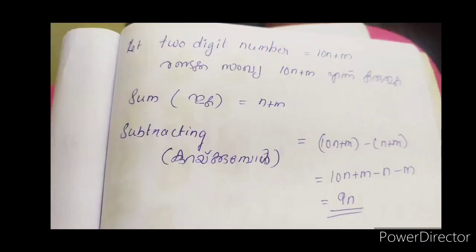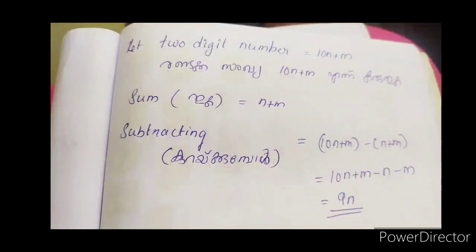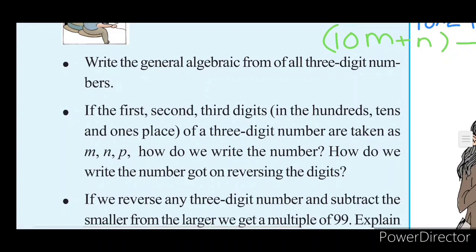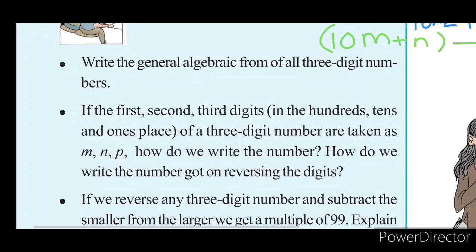Let the two-digit number equal 10M plus N. The digit sum equals M plus N. Subtracting: (10M plus N) minus (M plus N) equals 9M. So the result is always a multiple of 9.